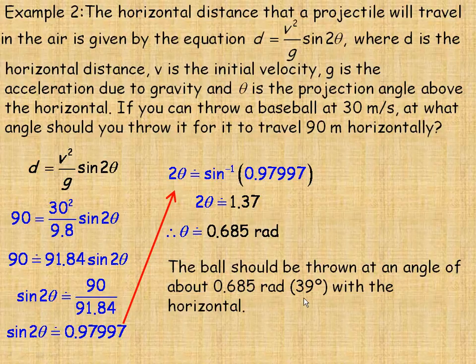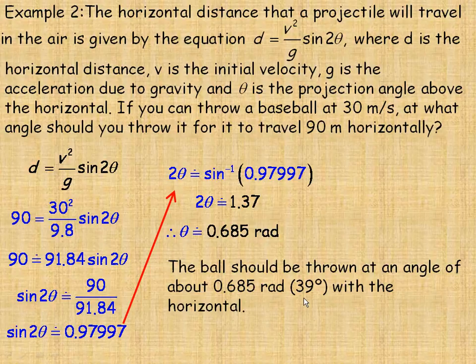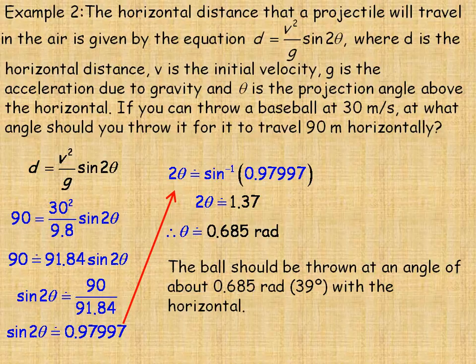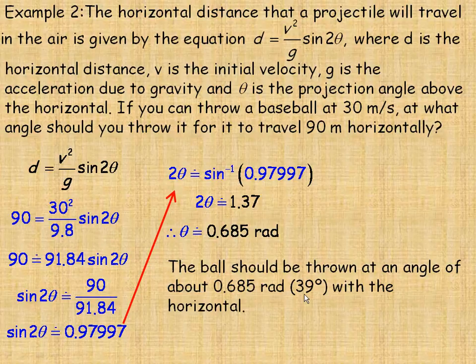If you want to convert that to degrees, remember that we could convert the 0.685 radians to degrees just by multiplying 0.685 by 180 over pi, and we'll get about 39 degrees. So if you want to think of degrees, that's the angle you have to throw that ball with the horizontal to get it to go the 90 meters.